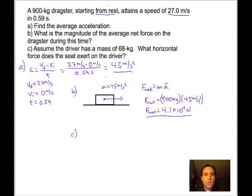Part C says assume the driver has a mass of 68 kilograms. What horizontal force does the seat exert on the driver? We're going to assume that the driver accelerates at the same rate that the car does, which is a pretty good assumption. So the driver accelerates at a rate of 45 meters per second squared.